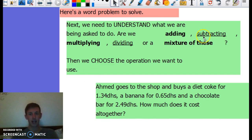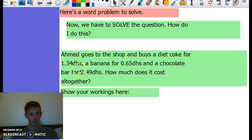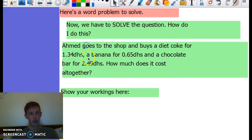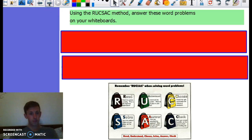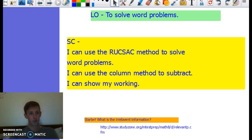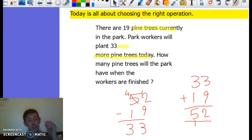I think I need to add - I need to put these prices together and find out how much it's all together. So how do we solve this? I need to add 1.34, 0.65, and 2.49, and then that would give me my answer. Then later in the week, we had to choose the right operation. As you can see here on the board, we did this as a class.